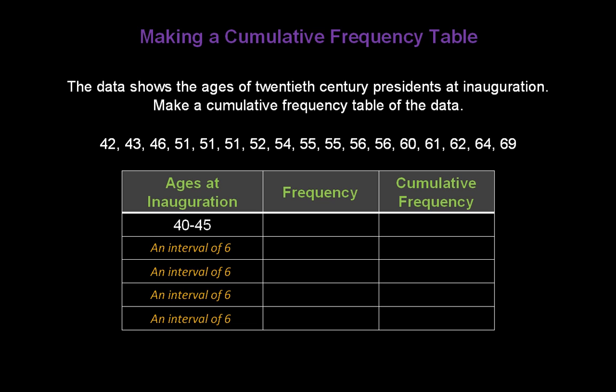Now, let's fill in the rest of the intervals. Just add 6 to all the prior numbers. So, 40 plus 6 is 46, and 45 plus 6 is 51, so our next interval is 46 to 51. Add 6 to each of those numbers and get a next interval of 52 to 57. The next group is 58 to 63, and the last interval of 6 would be 64 to 69.